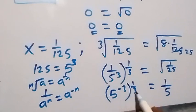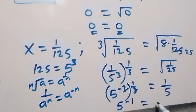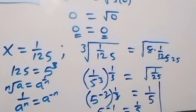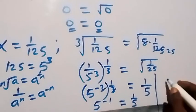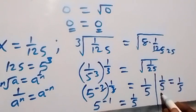Since the powers multiply, 3 times 1 over 3 gives 1, so this becomes 5 raised to power minus 1, which equals 1 over 5. On the right-hand side, 5 goes into 25 once, giving square root of 1 over 25, which equals 1 over square root of 25, which is 1 over 5. So the left-hand side equals 1 over 5, which equals the right-hand side.